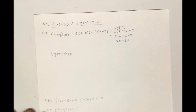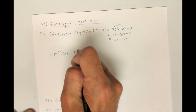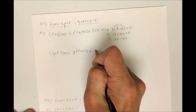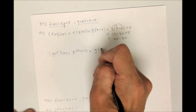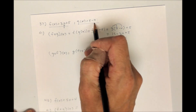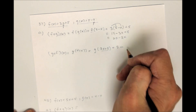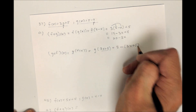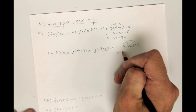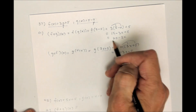Then g circle f of x: that's g of f of x. F of x is 3x plus 5, so I put 3x plus 5 in there. Now I'm taking g of this, plugging all of it in for x in g's rule. Careful with that subtraction — it's going to be 5 minus all of that, so in parentheses: 3x plus 5. Distributing the negative 1, I get minus 3x minus 5, and the 5's cancel, so I just get negative 3x. These don't look the same at all.